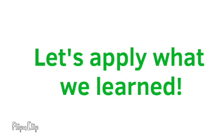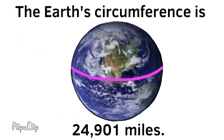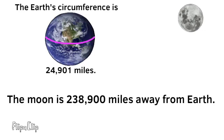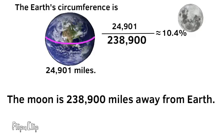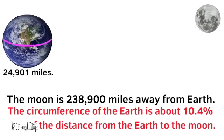Let's apply what we learned. The Earth's circumference is 24,901 miles. The Moon is 238,900 miles away from Earth. 24,901 divided by 238,900 equals a long decimal, which is approximately 10.4%. This means that the circumference of the Earth is about 10.4% of the distance from the Earth to the Moon.